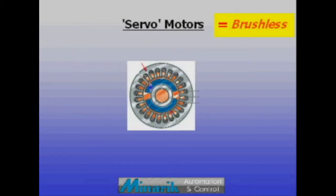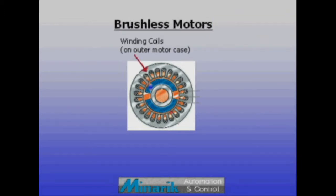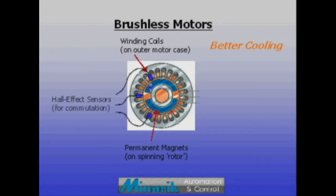Most often servo systems use brushless motors and drives, which combine the best features of AC and DC motors. Their windings are on the outer stator of the motor so they cool well. Their rotors contain only lightweight magnets and they don't use mechanical commutation, so brushless motors can accelerate fast.